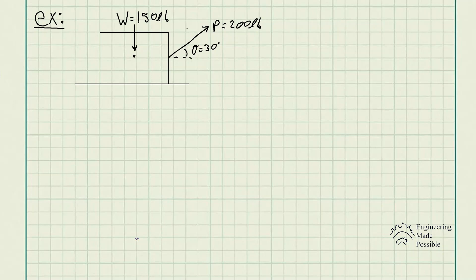Determine the frictional force on the floor if theta equals 30 degrees and P equals 200 pounds.